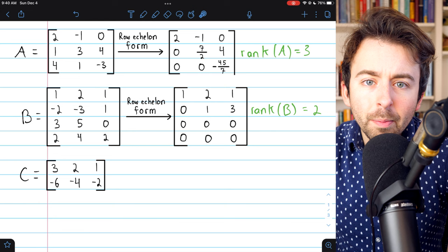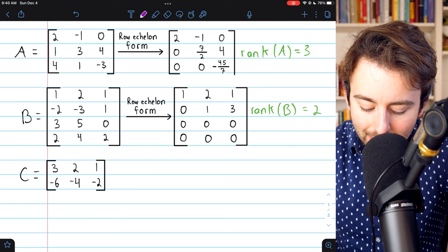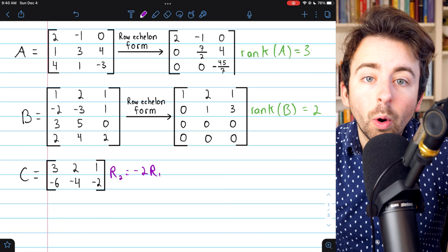The second row is simply equal to negative two times the first row, so C has only one independent row, and its rank, which we could also denote like this, is equal to one.